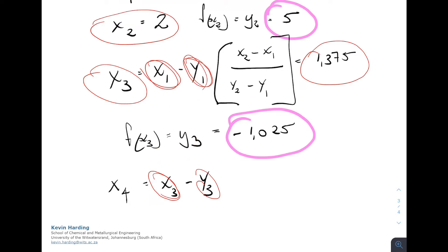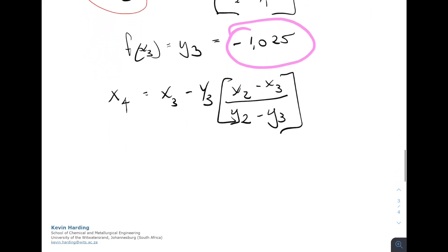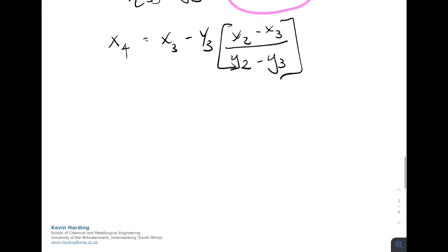Okay, so if we carry on, so we have x3 minus y3 is then going to be multiplied with x2 minus x3 divided by y2 minus y3. So wherever we had y1s in the first iteration, we now replace them by x and y3, because that's what we replaced it with when we saw the positive versus the negative number. Calculating that, we now get an x4 value equal to 1.481. The f of x4 or y4, when we calculate that, then becomes negative 0.271.